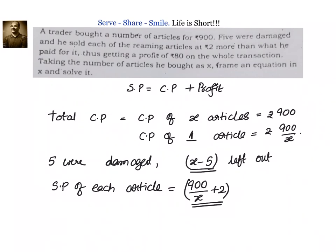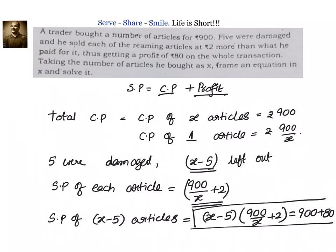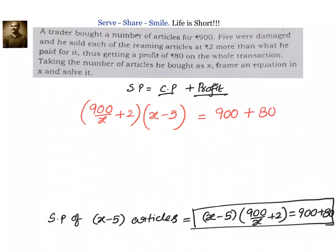The total SP is SP of each article multiplied by number of articles sold. So SP of x minus 5 articles equals (x minus 5) into (900 divided by x plus 2). We also know this equals cost price plus profit, which is 900 plus 80. So this is the equation we have to solve to find the value of x.